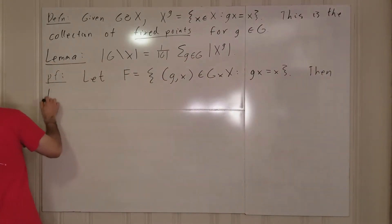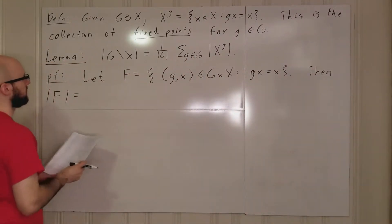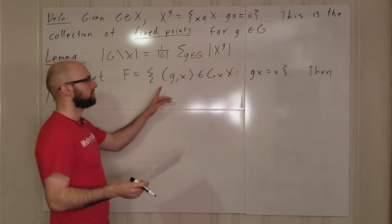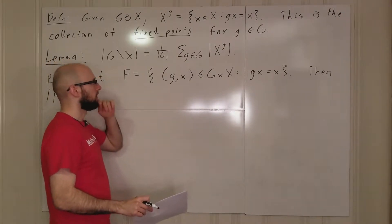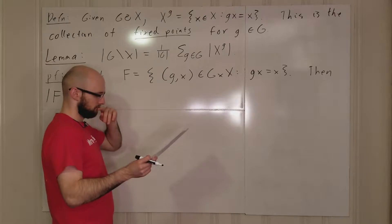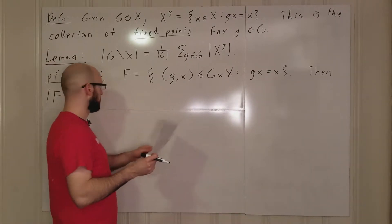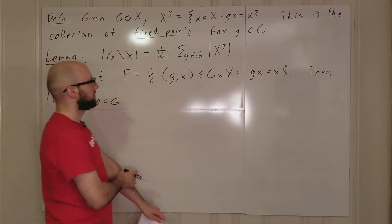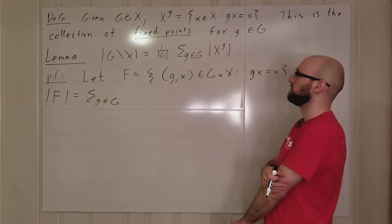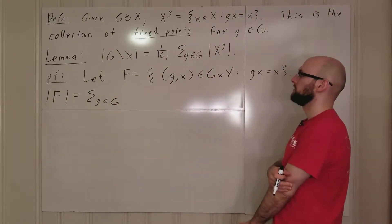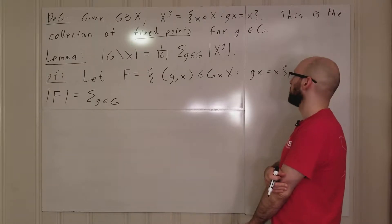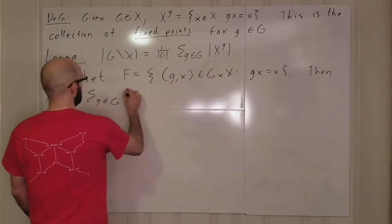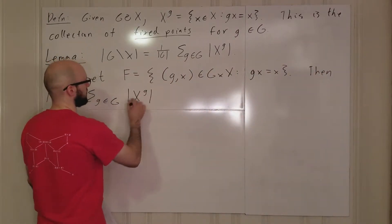For |F|: if we sum over all g in G, and consider some element of G, then F contains the elements of X that g fixes. The collection of elements of X that g fixes is exactly X^g.